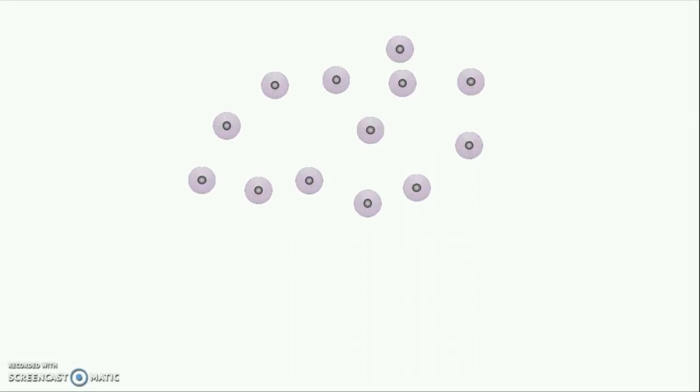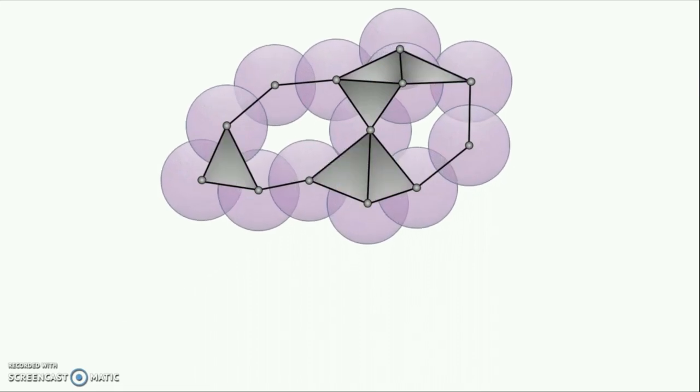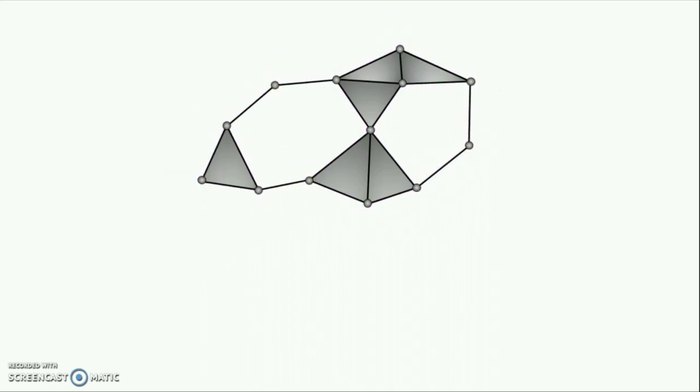Let's begin with an example. Suppose we are given a simplicial complex. Maybe it's the RIPS complex of a set of data points. We're often interested in those in TDA. And let's suppose we'd like to learn something about the homotopy type of this complex, possibly the Betty numbers.